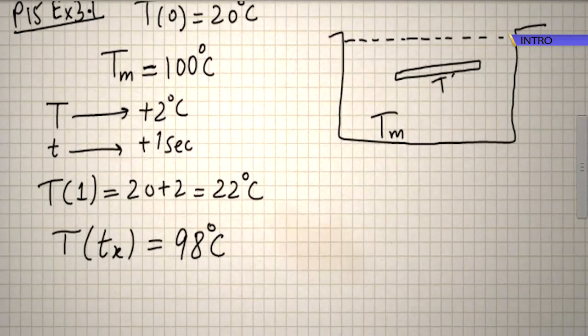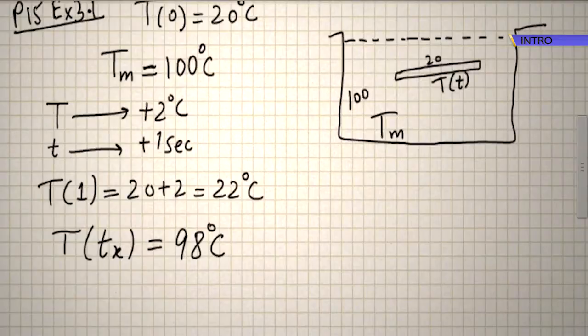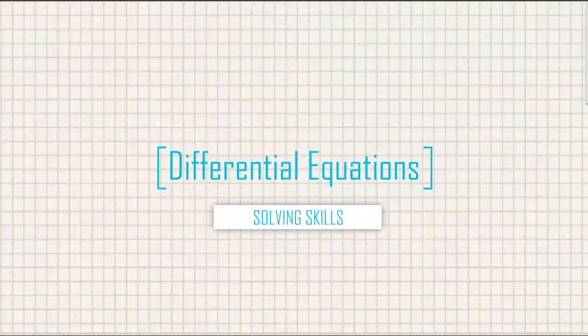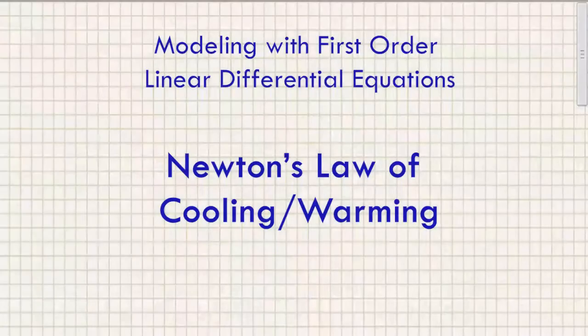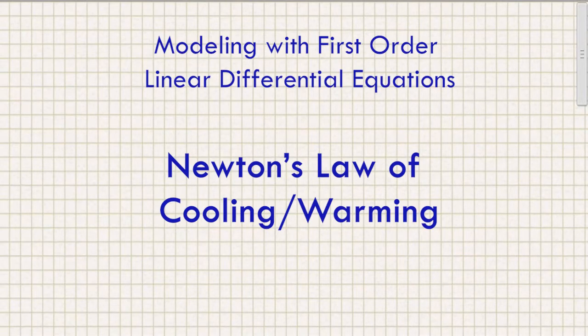The initial temperature of this metal bar was 20 degrees centigrade everywhere; it is 100. Hello guys, I hope you're doing great. In this video we'll be understanding Newton's Law of Cooling and Warming.